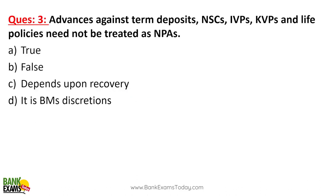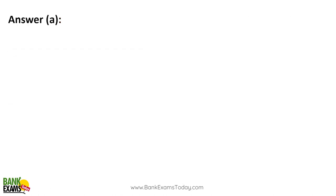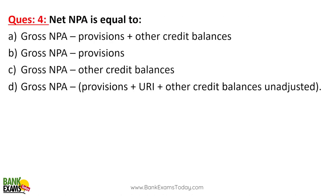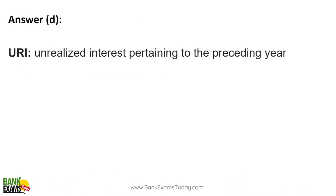Advances against term deposits, NSCs, IVP (Indira Vikas Patra), Kisan Vikas Patra, and life policies will not be treated as NPA — because the bank can always encash these. Net NPA is equal to gross NPA minus all provisions, minus unrealized interest (URI) pertaining to preceding years, plus any unadjusted credit balance. That is the definition of net NPA.